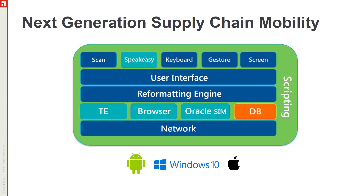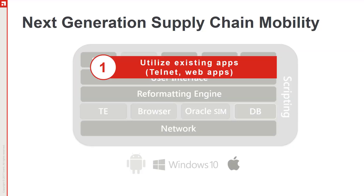Velocity is a framework for delivering your next generation mobile deployment. To start, it leverages the existing apps and enterprise systems you already have in place. We're not talking about ripping out or replacing your WMS, ERP, or other host systems. Instead, Velocity lets you bring those existing mobile clients — telnet, web apps, even Studio for Oracle Sim —